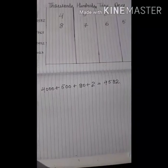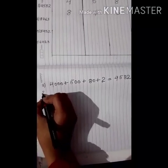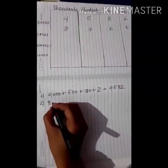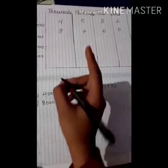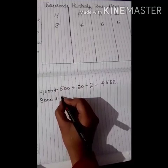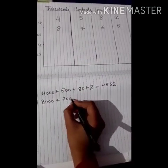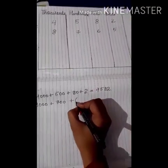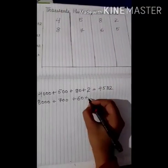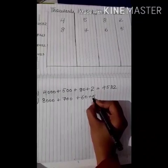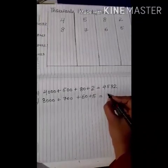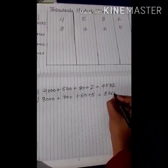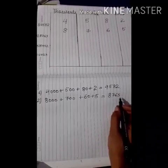Again, if we write this in the expanded form: 8 is on the 1000's place, so in 1000's how many zeros? 3 zeros — 1, 2, 3. 7 is on the 100's place, so in 100's how many zeros? 2 zeros — 1, 2. 6 is on the 10's place, so in 10's how many zeros? Only 1. And in 1's, no zeros, so we write 5 as it is. So we have 8765.